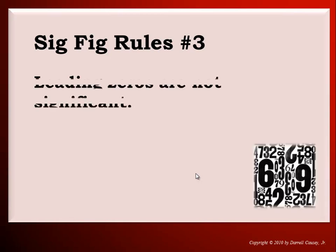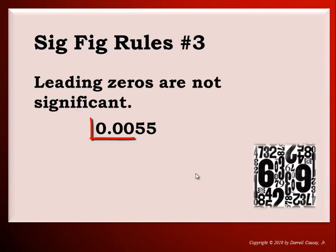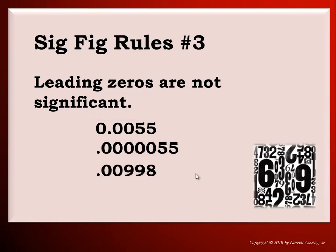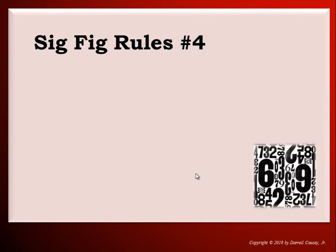Significant figure rule number three: leading zeros are not significant. Here are some more examples — all those leading zeros are not significant.